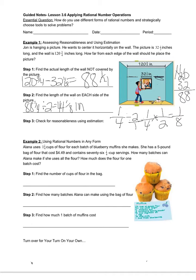Now for the third step, I'm going to check for reasonableness using estimation. When I read 120¾, to me that's like 121. And 32½ is pretty close to 33. So I'm going to check by subtracting 121 minus 33, which is 88. And when I take 88 and divide that by 2, I get 44. So my answer should be close to 44 inches. Our actual answer is 44⅛ inches, so I would say my work is correct because the estimation proves I am close.